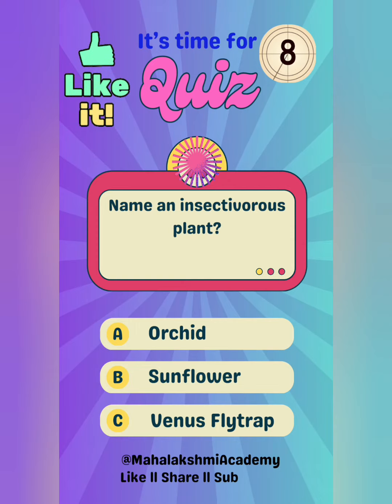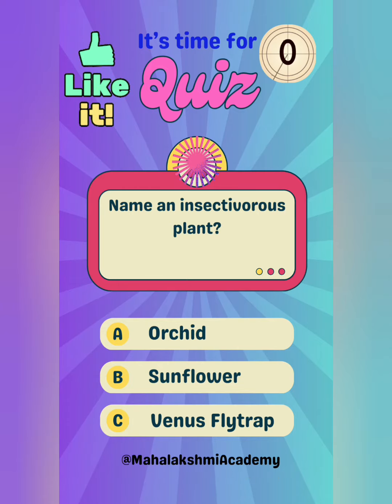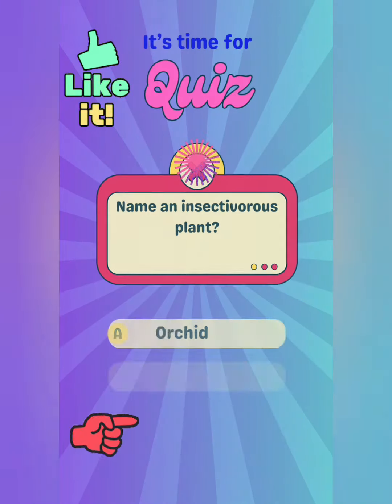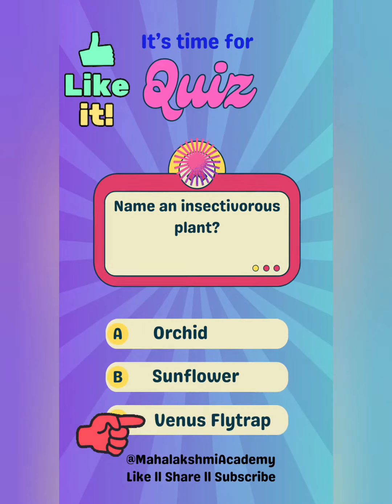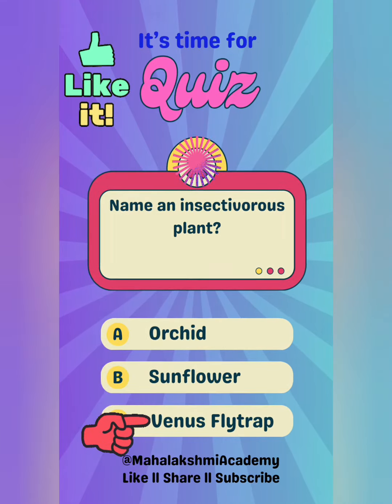Name an Insectivorous plant. Options are: Orchard, Sunflower, or Venus Flytrap? And the answer is Venus Flytrap.